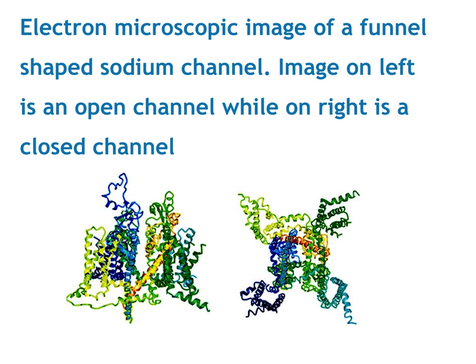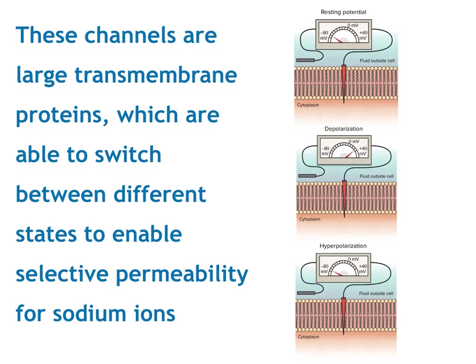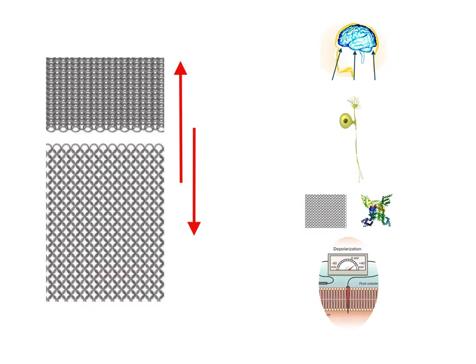This is an electron microscopic picture of a classic sodium channel. The one on the left is an open sodium channel and the one on the right is a closed sodium channel. These channels are large transmembrane proteins which are able to switch between different states to enable selective permeability for sodium ions — just like a mesh with voltage gating. The mesh can be either closed or open, allowing or stopping sodium ions to cross through these channels, thereby either producing painful sensations or not producing them in the brain.